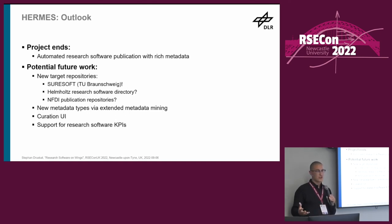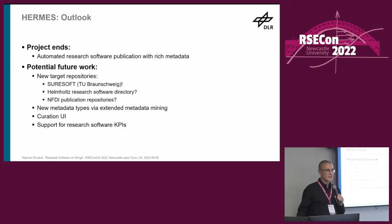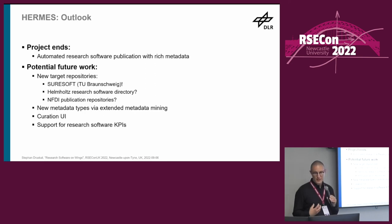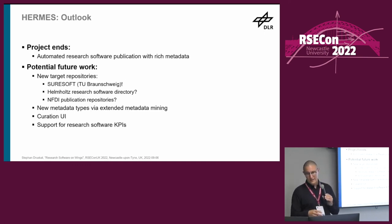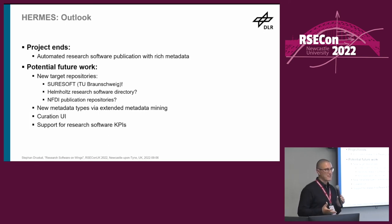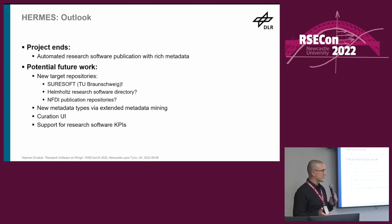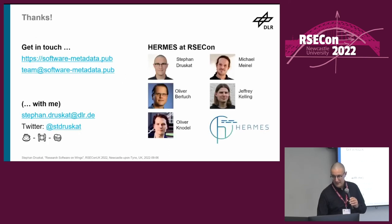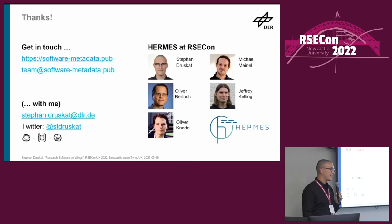There are many directions for future work: new metadata types crop up all the time, we can extend the metadata mining, a curation UI would be valuable — a website where people can simply click through and approve or flag issues. There's also the politically interesting area of research software KPIs and key performance indicators, providing metrics, though we need to figure out how reliable and easily gained those can be. When the project ends next summer, we will have an MVP where you can automatically publish your software with rich metadata. Please get in touch, come to the workshop tomorrow, speak to me or my colleagues Oliver and Oliver.